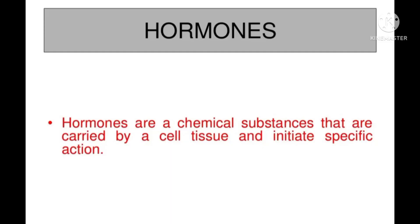Hormones are the secretions from specific cells or glands in the body, carried to all parts through the blood, but their effect is produced in one or more specific parts — that is, the target organ.